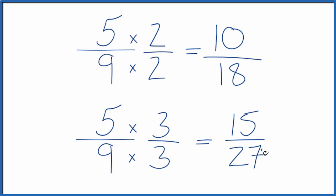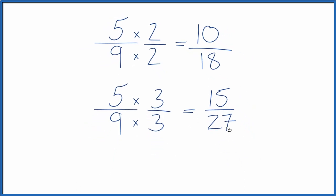And again, if you divide 15 by 27, you'll get the same decimal value as 5 divided by 9 or 10 divided by 18. They're equivalent fractions. One last one.